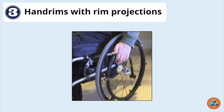This is indicated with C5 tetraplegia, where the lowest innervation includes the biceps, brachialis, brachioradialis, deltoids, rhomboids, and supinator. Although a patient with C5 tetraplegia may utilize hand rims with rim projections, the necessary energy expenditure may necessitate the use of a power wheelchair for mobility.